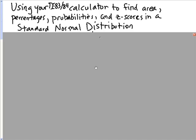Let's look at using your TI-83 or 84 calculator to find areas, percentages, probabilities, and z-scores in a standard normal distribution.